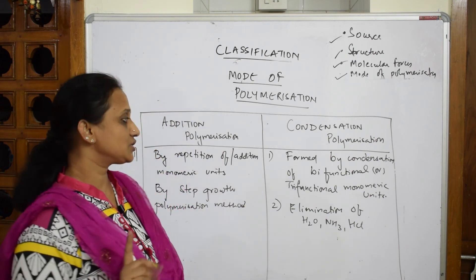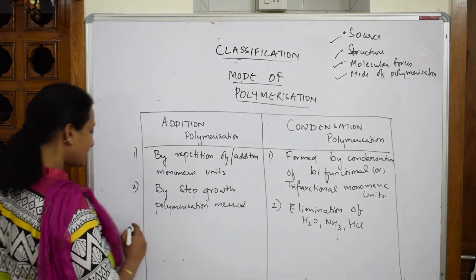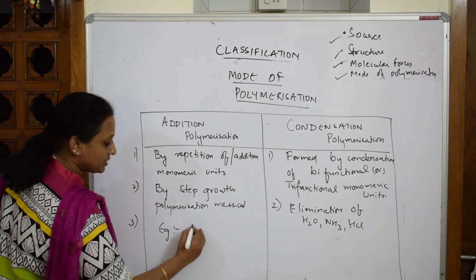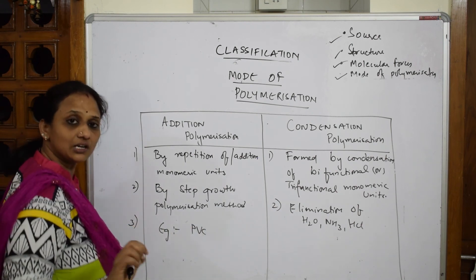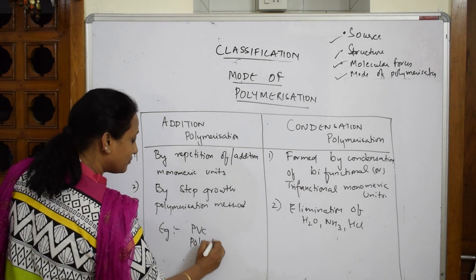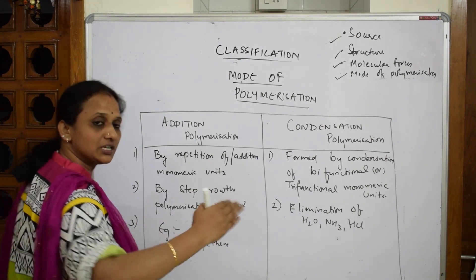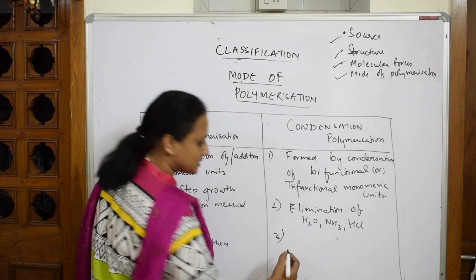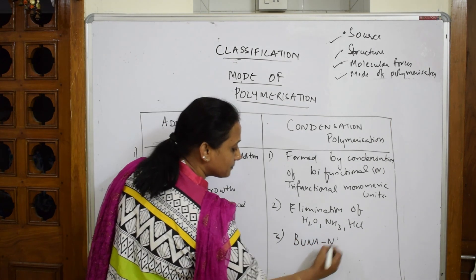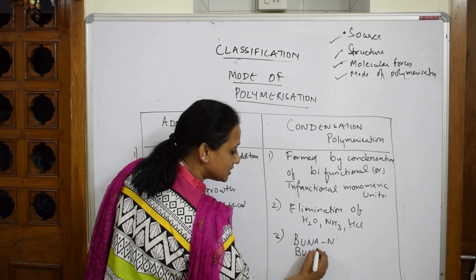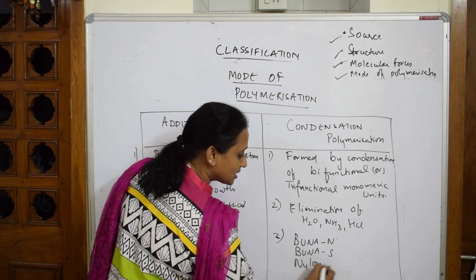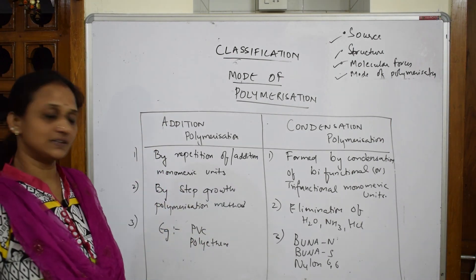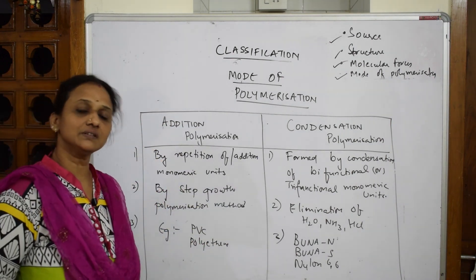For examples: addition polymerization includes PVC (polyvinyl chloride) and polyethene, where one chain keeps increasing. For condensation polymerization, examples include Buna-N, Buna-S, and Nylon 6,6. So these are the differences and examples for both types of polymerization.